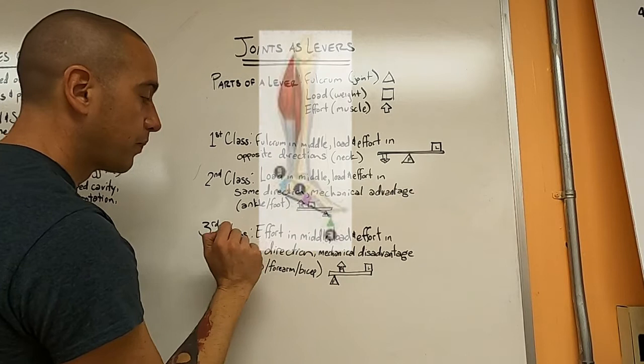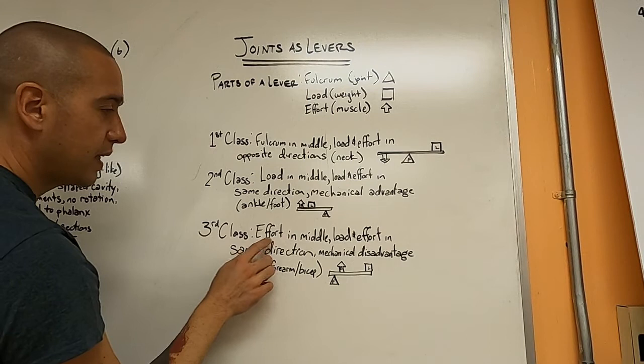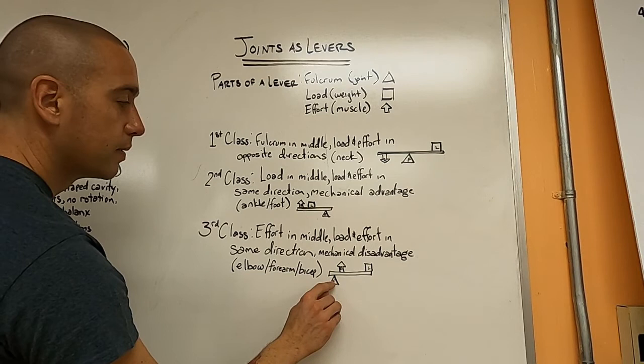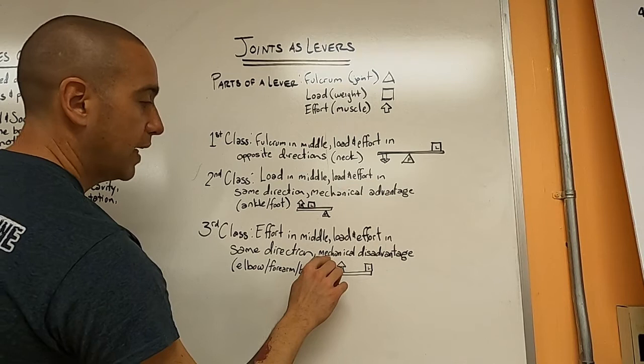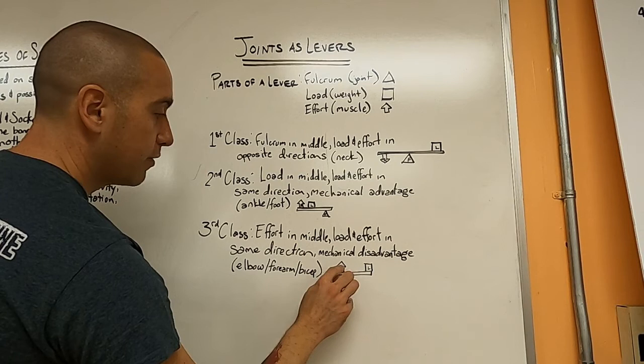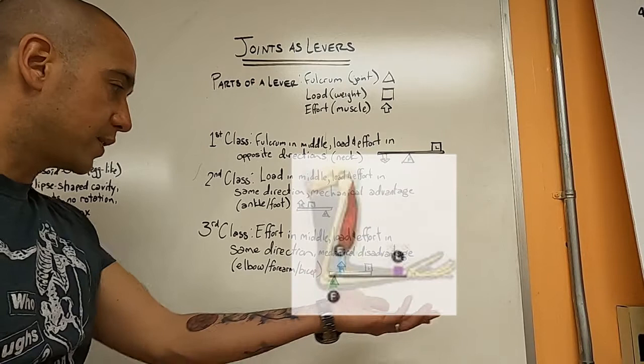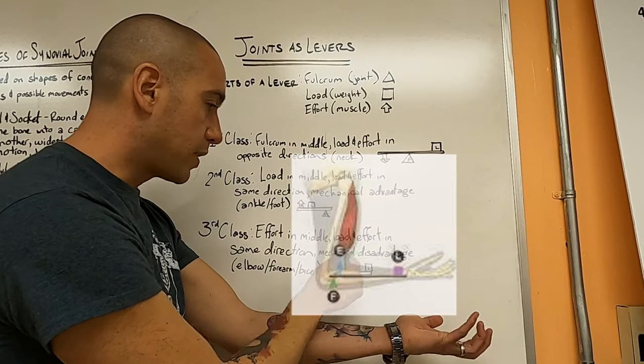In a third class lever, the effort is in the middle with the load on one side and the fulcrum on the other. Now in this case, the effort, the direction of it, is going to cause the load to move in that same direction. Now here you actually get a mechanical disadvantage. It is harder to lift this load by using the same amount of effort when it's closer to the fulcrum. And the way to picture this, this would be like the fulcrum could be your elbow. This would be your forearm. You're trying to lift something or just the forearm itself. And the effort would be your bicep pulling up.